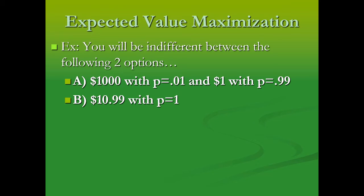With a 1% chance, we will end up with $1000, and with a 99% chance, we will end up with $1. Expected value maximization states that these two outcomes will end up being exactly the same. Why? Well, option B is easy—it's worth $10.99. Option A, what do we do?